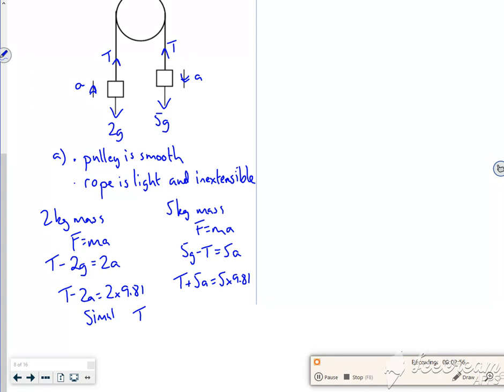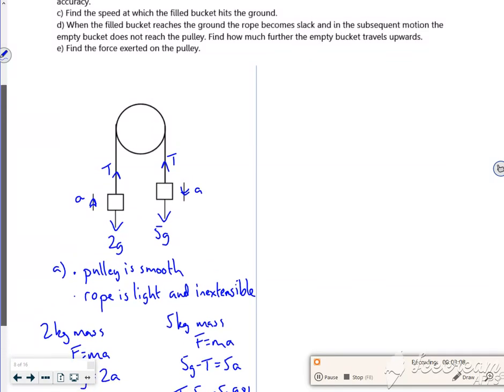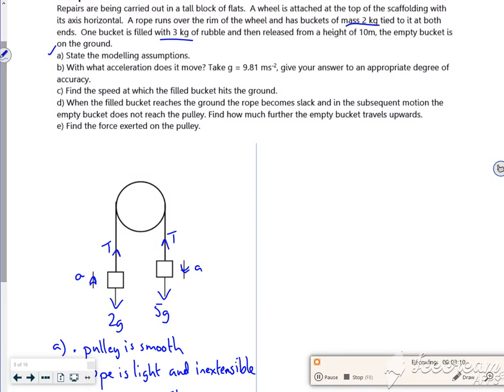So whatever that is from your calculator, it gives me an acceleration of roughly 4.20 meters per second squared. So that's part A done.